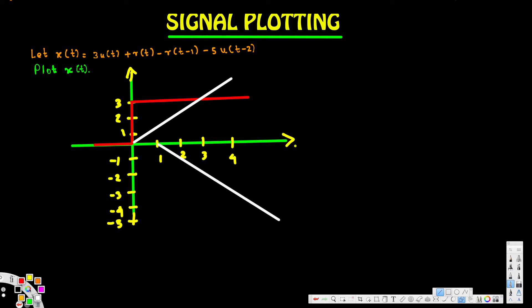Let's label the individual component graphs: the first is 3u(t), the second is r(t), and the third is -r(t-1).